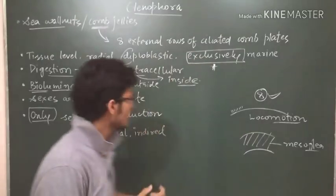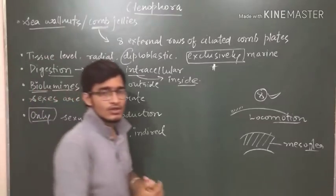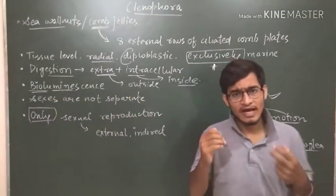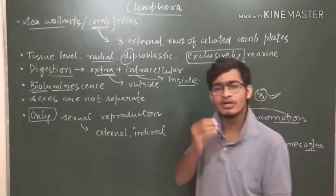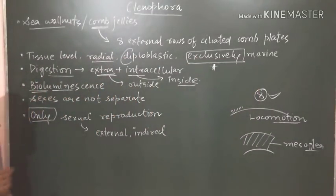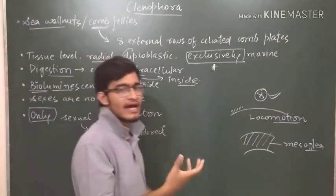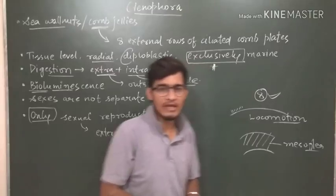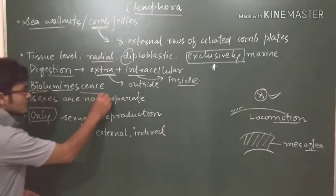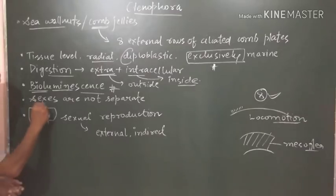After that, bioluminescence. It is a very important property and it is usually asked in the examination. Bioluminescence simply means when bio, that is living organisms, used to provide light, that is luminescence. So when any living organism emits light, that particular feature is known as bioluminescence and it is very abundant in Ctenophora.